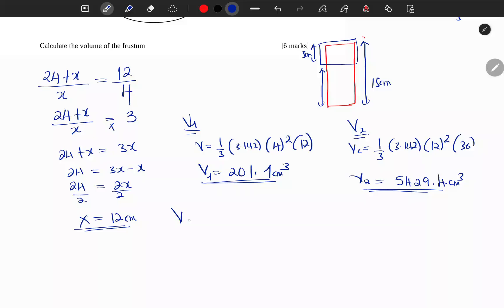Then volume of the frustum is equal to V2 minus V1. So 5,429.4 minus 201.1 - the volume of the frustum is 5,228.3 cubic centimeters. Don't forget the unit.